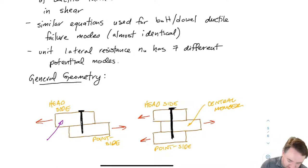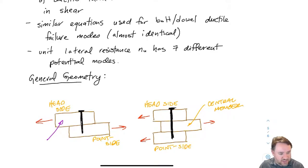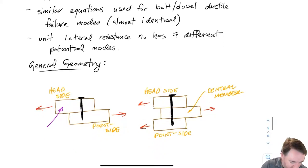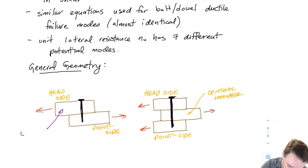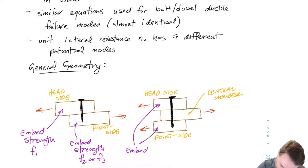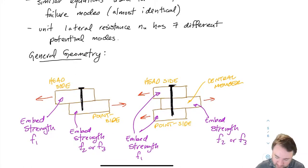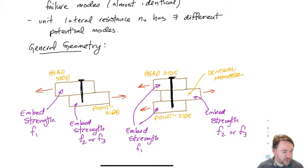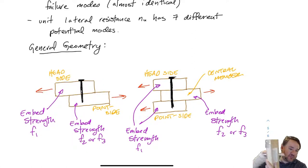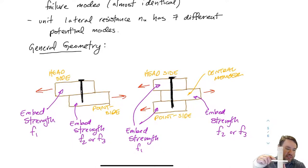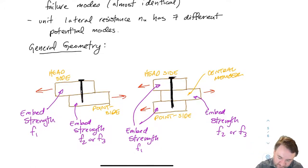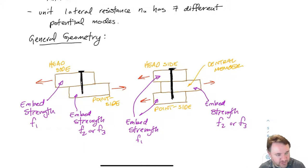Each piece of wood will have an embedment strength, and the pieces of wood in these connections can be different sizes or even different species. Sometimes some of them can be steel. So they will have different embedment strengths depending on what material they are. There are three different embedment strengths we'll use: F1 and F2, which are the straight embedment strengths of a nail being pulled through a piece of wood, and F3, which is for cases where the nail is yielding as it's being pulled through an embedment.